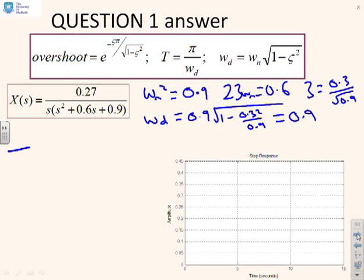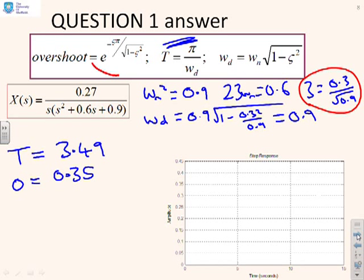So over here, I can write T equals 3.49 using this formula here. I can write the overshoot equals 0.35 by putting this value in here. And now, therefore, I can get overshoot squared equals 0.12 and overshoot cubed equals 0.04. And I think after that, they're starting to get on the small side.